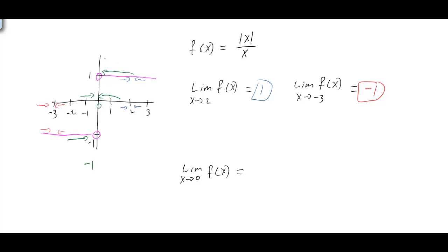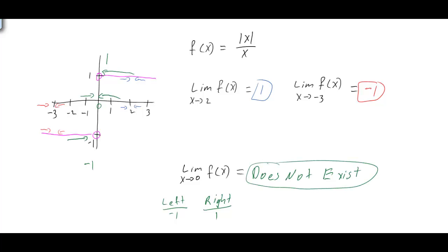The third example asks for the limit of the function as x approaches 0. If we approach 0 from the left, our y value is approaching negative 1. If we approach 0 from the right, our y value is approaching positive 1. From the left we get negative 1, and from the right we get positive 1 — two different numbers. In order for your limit to exist, you must be approaching the same number, so the limit does not exist.